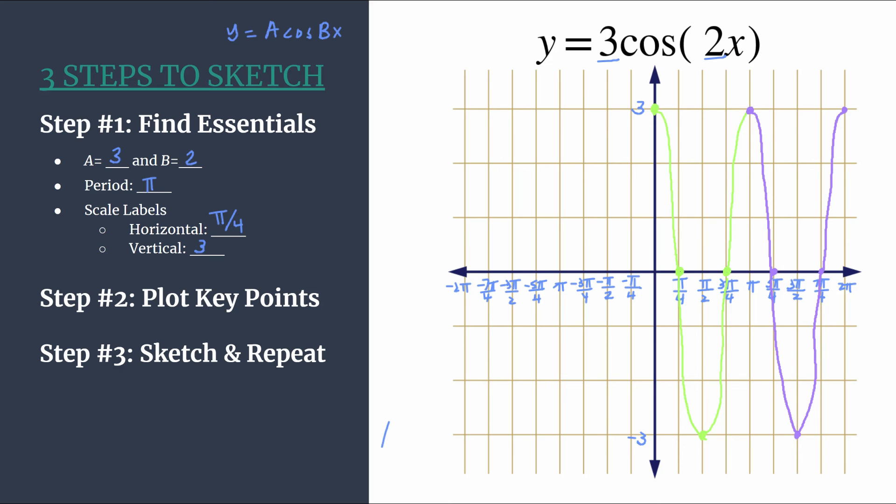So our graph continues that way. And before we even finish some other cycles, notice that we do have two cycles happening between 0 and 2 pi. This is confirmation of what we said about b earlier. So we have the green cycle 1 and this purple cycle 2. So b is two, two cycles happen between 0 and 2 pi.